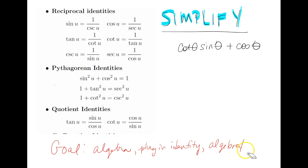I don't want to tell you that you always want to turn everything into sine and cosine and see what happens, because sometimes that's not the case. But if you get desperate and you don't have an idea, then turn everything into sine and cosine. That's kind of a last resort for me.